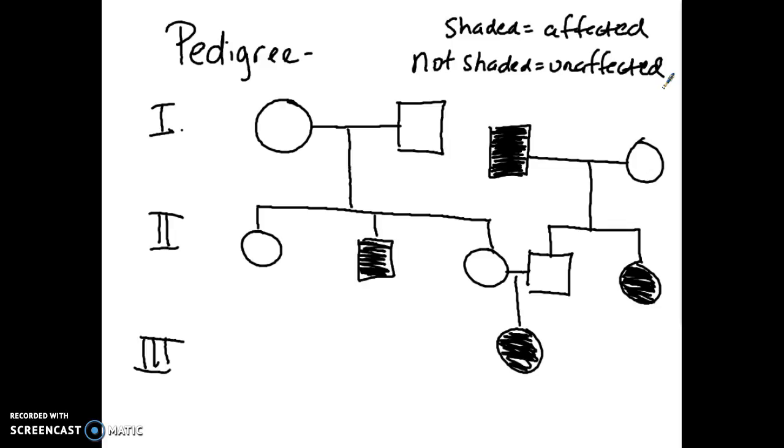From this, I can get that information. I can see that four people are affected by whatever trait. Let's just say, for example, that we are looking at attached earlobes. So those four people have attached earlobes here, here, here, and here.